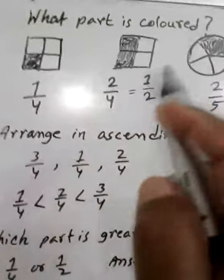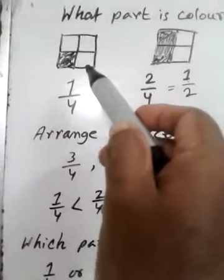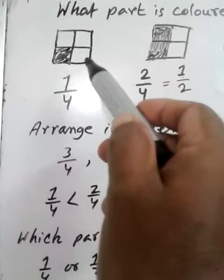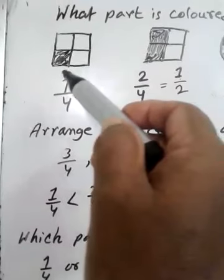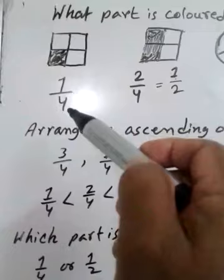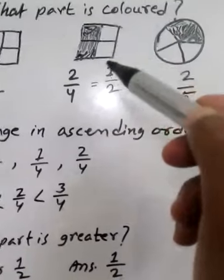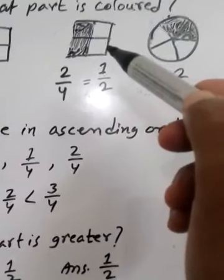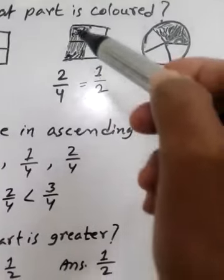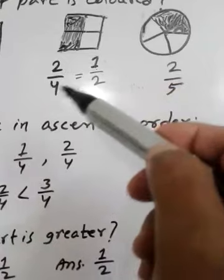What part is colored? See, this square is divided into 4 parts and 1 part is shaded — 1 by 4 part is shaded. And this is divided into 4 parts and 2 parts are shaded — 2 by 4 part.